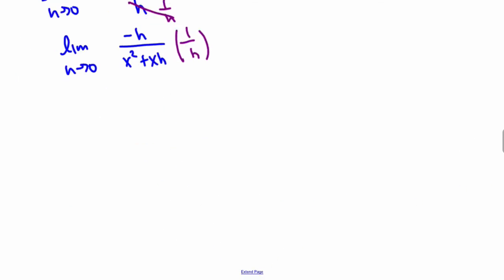Now you can see that these will cancel, and I'll be left with the limit as h approaches 0 of minus 1 over x squared plus xh.